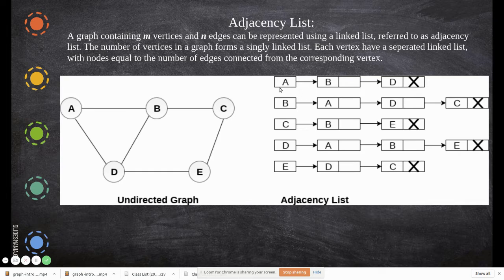For example, A. A has adjacency node as B and D. So that is what here we are representing B and then D. Since it is over, we represent the last node to indicate it is the last node. We represent the null pointer.